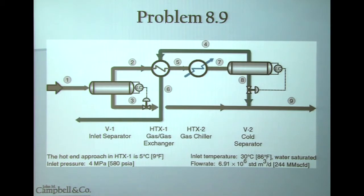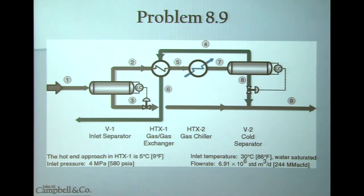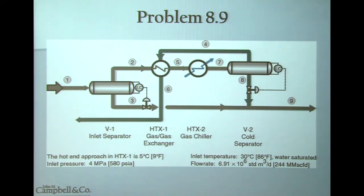You take feed, which is stream number 1, and bring it into a warm separator where you separate the liquids from the vapor. In chapter 5 you will learn how to do a flash calculation. We take the vapor leaving the warm separator, which is stream 2, and pass it through a gas-to-gas exchanger where we cool down stream 2 to a lower temperature in stream 5. That two-phase mix of stream 5 then goes through a chiller where we drop the temperature further.